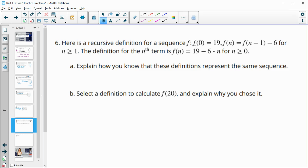Number six, here's a recursive definition for this sequence. Explain how you know that these definitions represent the same sequence. So in this first one, they give us the 0 term, so our first term of 19. Then they're saying we're going to take the previous term minus 6. So we're going to minus 6 for the first term. Then we're going to minus 6 for the second term. Then we're going to minus 6 for the third term. So this one is just saying we'll start at 19 and minus 6 per term. So this is still going to be minusing 6 per term. So that's how we know that they're the same. They've got that minus 6 each time.